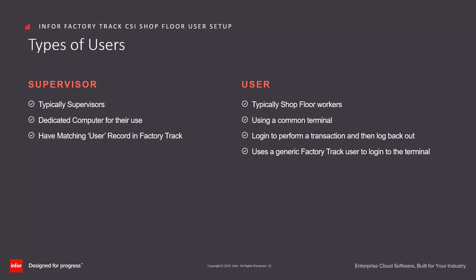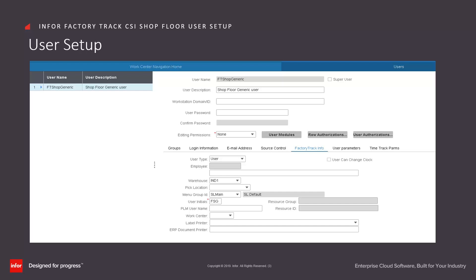See the Factory Track Shopfloor Dedicated vs Generic Employees video for more information. Shopfloor users need to be set up using the Users form in Factory Track. It should be noted that each employee might not have a user record. If they do not have a dedicated user, then they will be using a generic user to log in with.